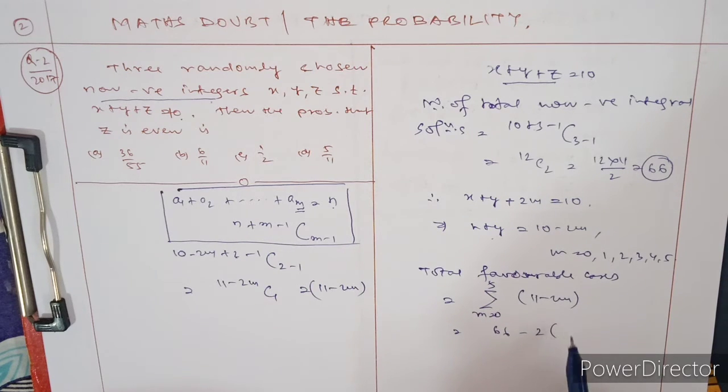That is 66, and this term is 5 × 6 / 2, which equals 30. So the difference is 30, giving us 36 favorable cases.